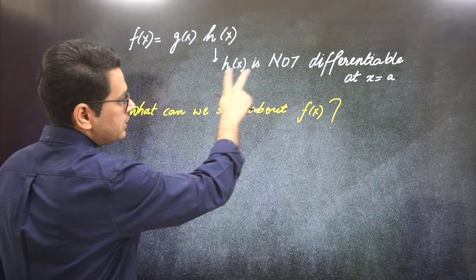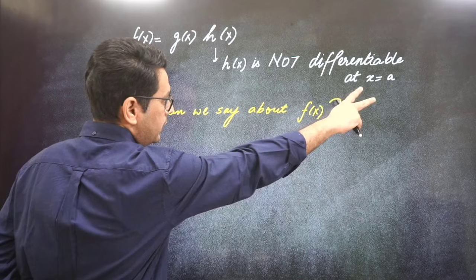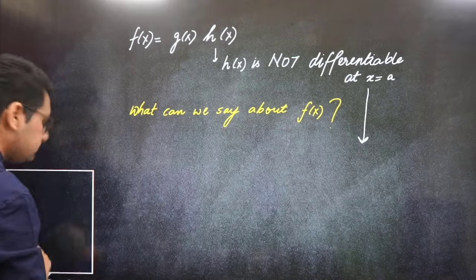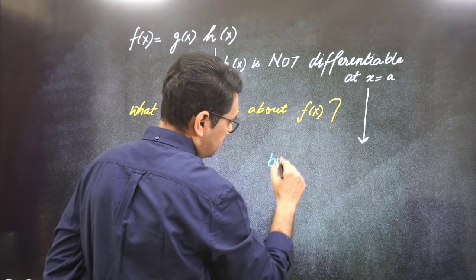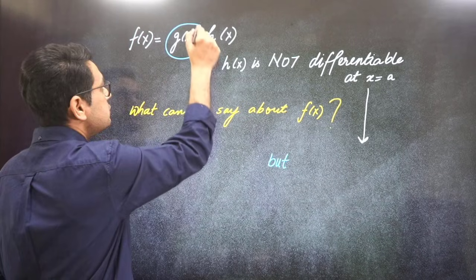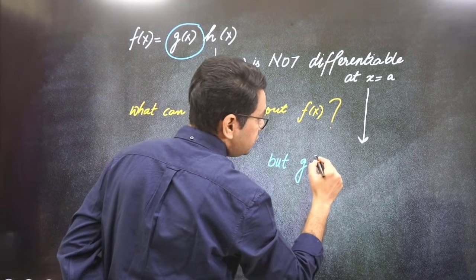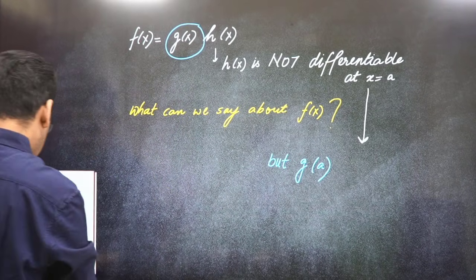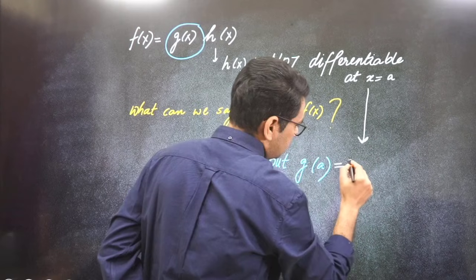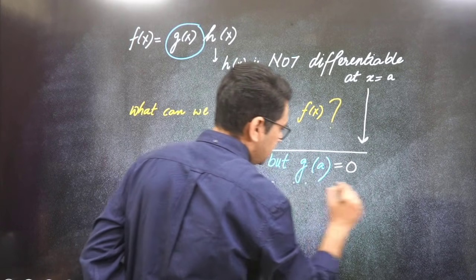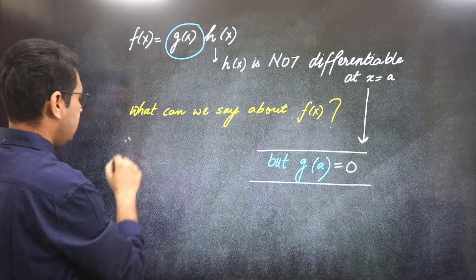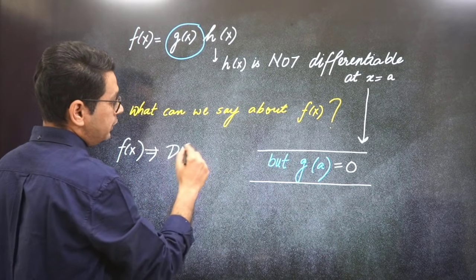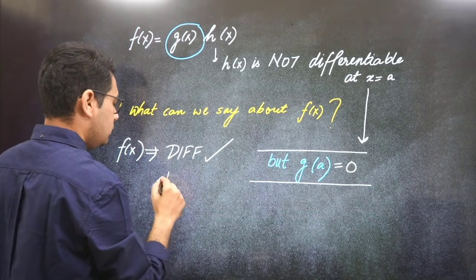The concept says h(x) is not differentiable at x equals a. But, if the first function g, if g(a) equals zero, then this implies f(x) will be differentiable at x equals a.